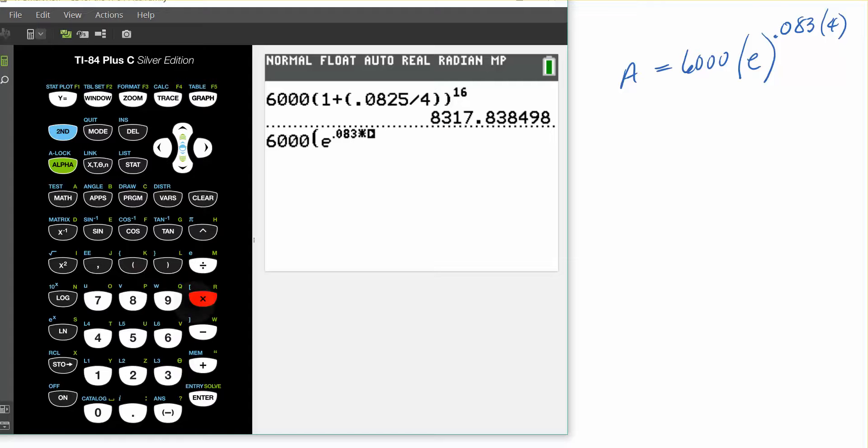Times the 4 years. I'm going to arrow out of that position and then I'm going to close my parentheses. Hit enter. And you can see that if I were to invest that $6,000 compounding continuously, I get a dollar amount of $8,362.52.